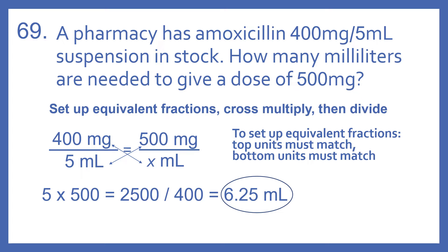So if we cross multiply, 5 times 500 is 2500, and then divide by 400, that gives us 6.25 ml. So 6.25 ml would give a dose of 500 mg.